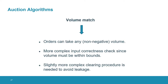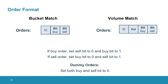Now we look at the order format and see which information is contained in the orders for both algorithms. Notice that this information is all in secret shared form, so it will all be private. For both the bucket match and the volume match, there is an ID, which is the identity of the person who submitted the order. For the bucket match, we already know the volume of every order because all have the same predefined volume, so we only need information about the direction of the order — whether it is a buy or a sell. If the order is a buy order, the sell bit will be zero and the buy bit will be one, and vice versa for a sell order.